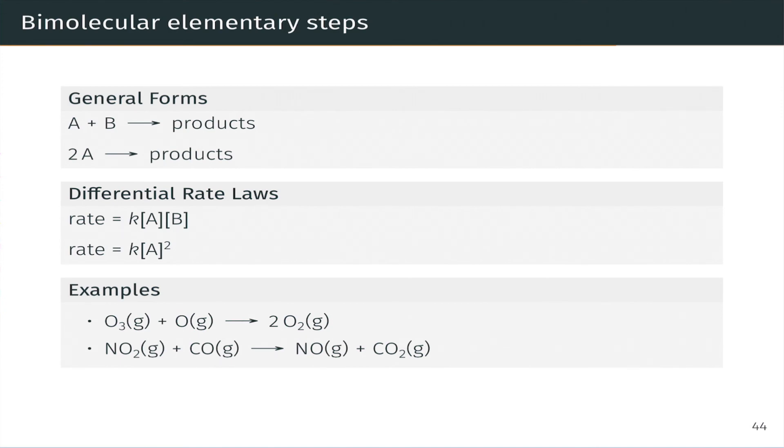And so an example of a bimolecular step would be the combination of an O3 molecule and an oxygen atom from the ozone decomposition mechanism we've seen, or the combination of an NO2 molecule and CO. So the overall step is bimolecular. We could say that the step is unimolecular in each of those reactants might be another way to put this.